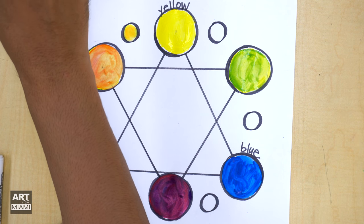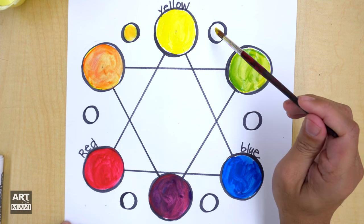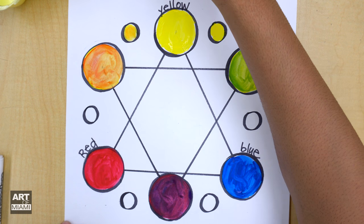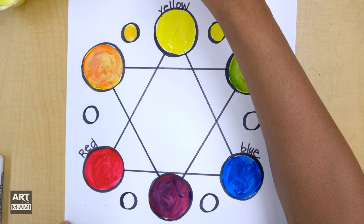Again, yellow first because it's lighter than green. And now we're going to put green. It's going to make like a light green.